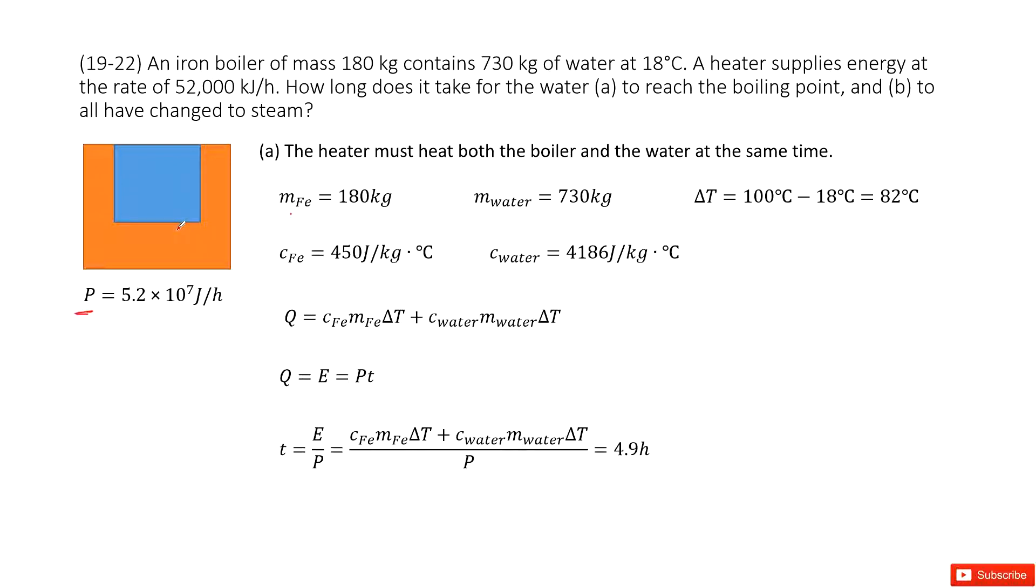We need to find the energy transferred. How much energy is transferred? We need to find the heat transferred to the water and the boiler. The heat transferred to the boiler is c_Fe × m_Fe × ΔT for the iron material. The heat the water absorbed is c_water × m_water × ΔT.